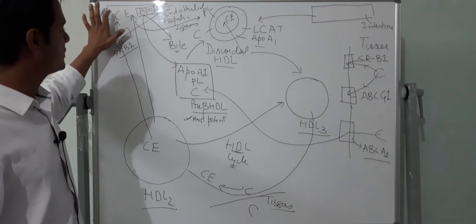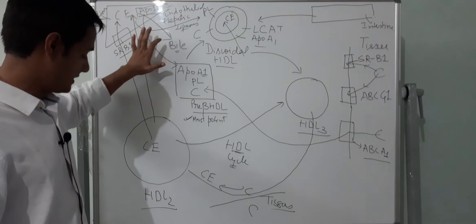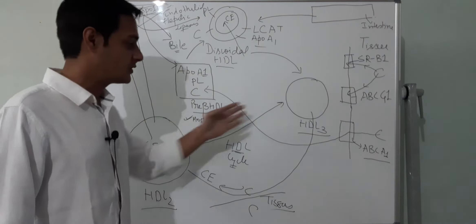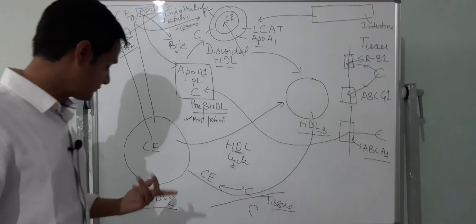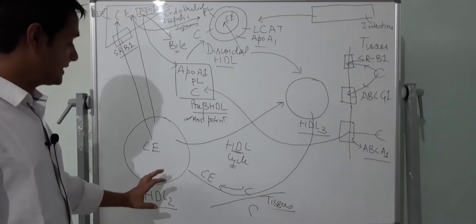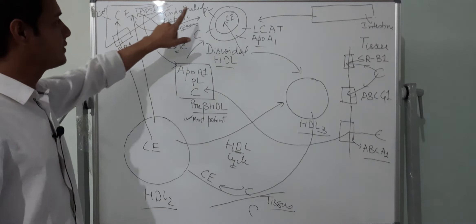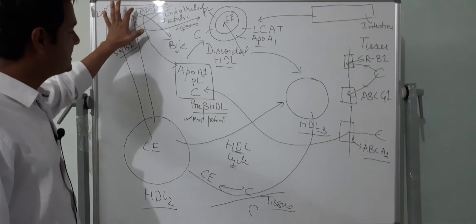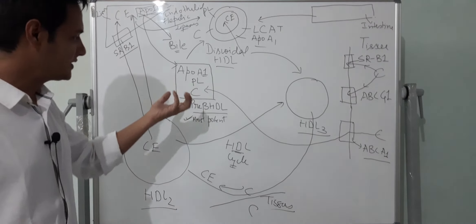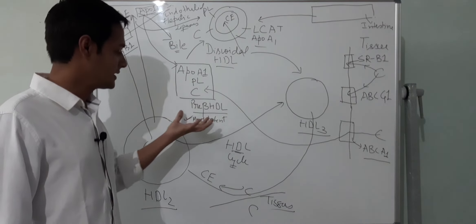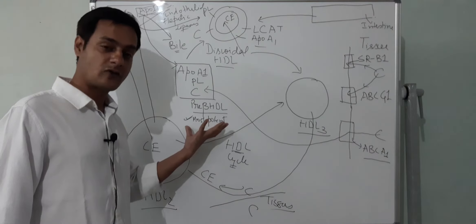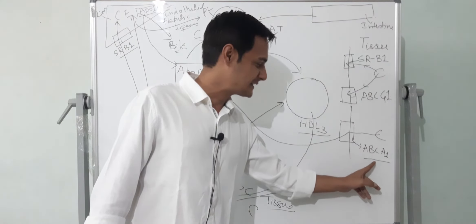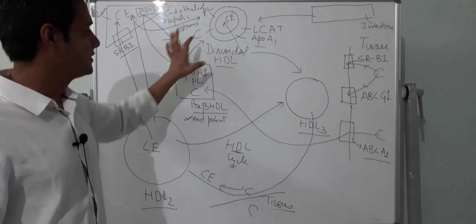The same accumulation of cholesterol ester inside the core continues, and HDL3 becomes HDL2. The cholesterol ester is then selectively taken up by the SRB1 receptor into the liver, where the cholesterol is excreted in the bile. As HDL2 loses cholesterol ester, it converts back to HDL3 and the cycle continues. Alternatively, HDL2 can be taken whole into the liver and catabolized by endothelial or hepatic lipase, releasing apoA1 into the plasma to form pre-beta HDL.